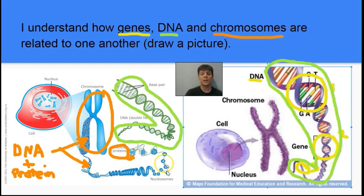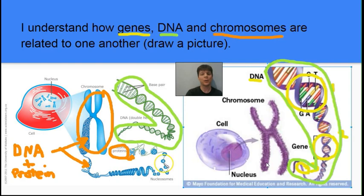Those DNA-histone complexes will form coils, and those coils will all bunch up together, and all together they make the chromosome. In our human cells we have 46 chromosomes — 23 pairs of chromosomes in a normal human cell.